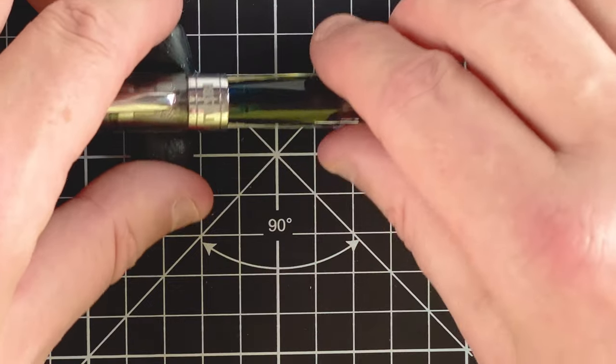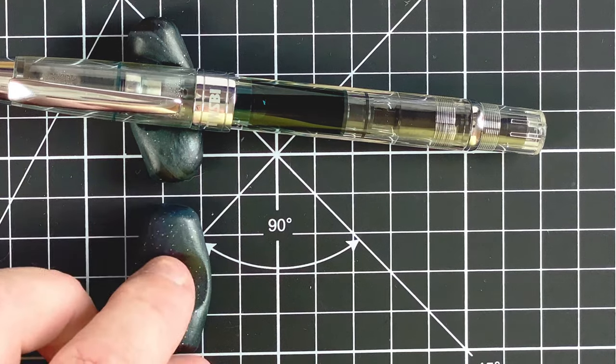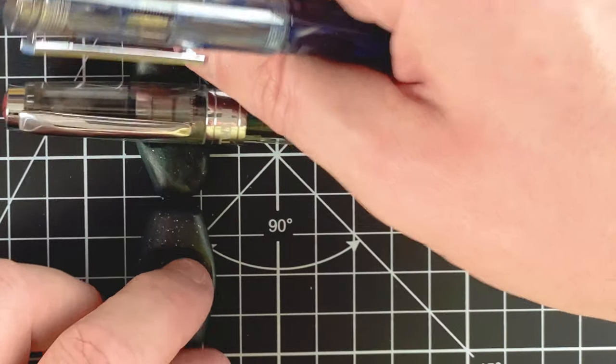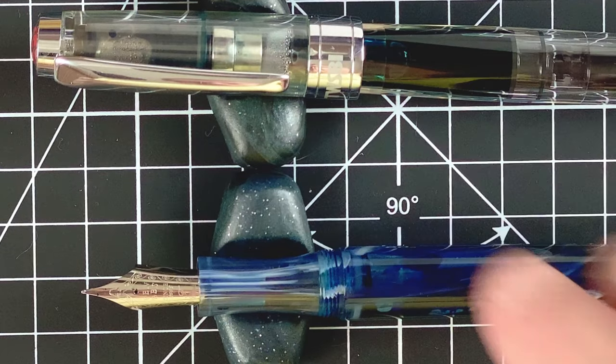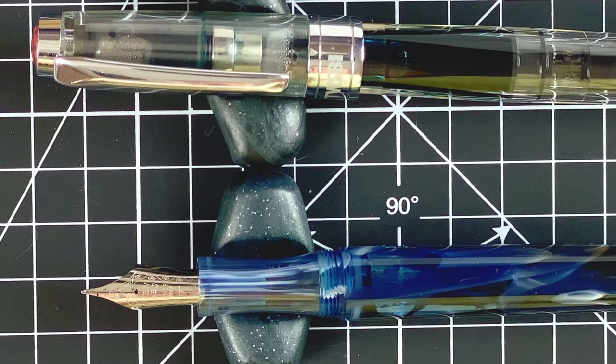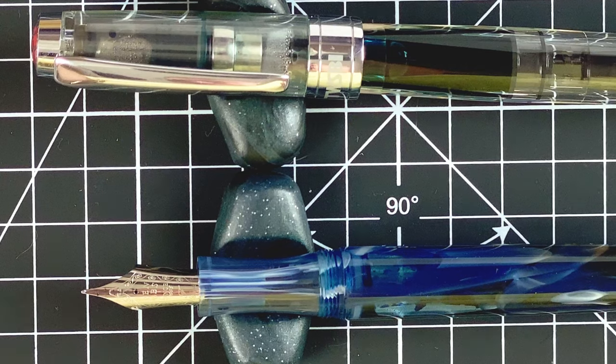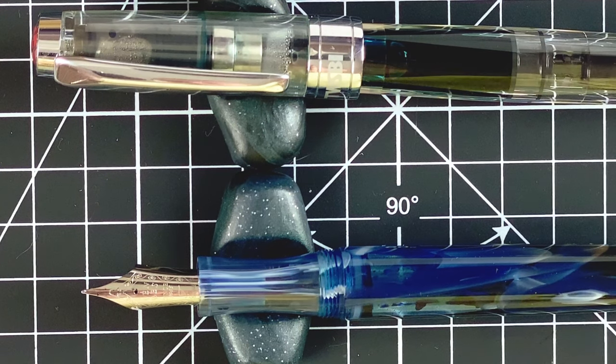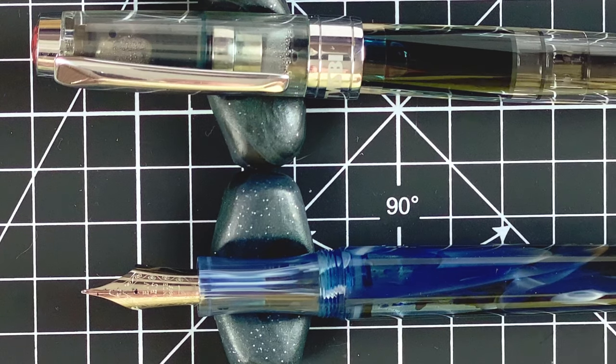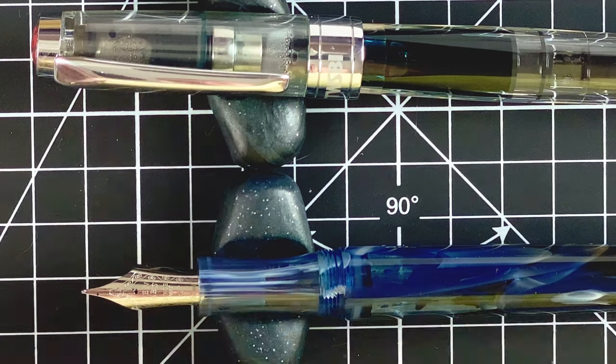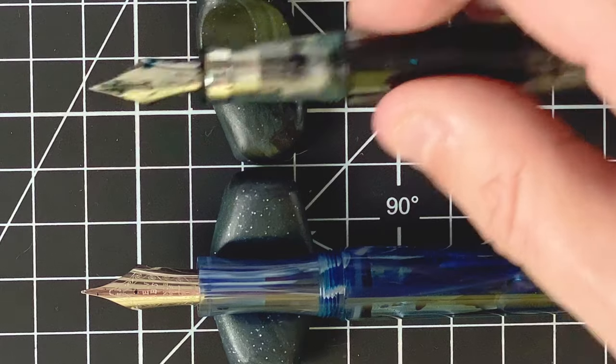So I'm just going to fetch in the other pen. And what we'll do is we'll take a look at the nibs. Let's look at these nibs side by side. So let's start with the 487. This is a standard PenBBS nib. So it's a number six size nib. It's a nice silver color. There's nothing special about it. I'd say it's that standard PenBBS nib. But I find all PenBBS nibs write really well. On the Twisby, again, we've got a Twisby nib here.